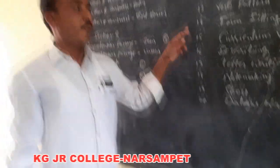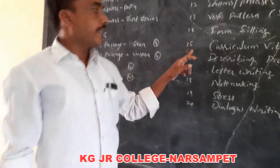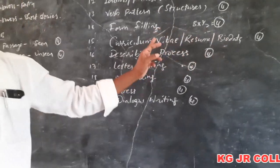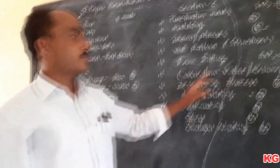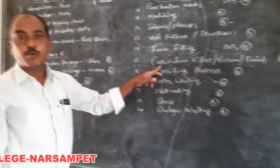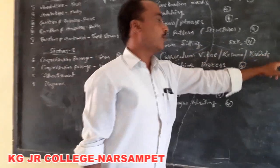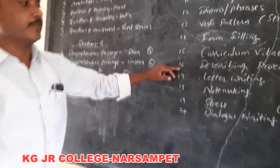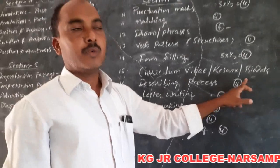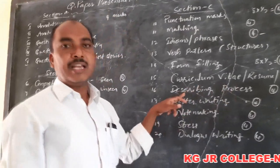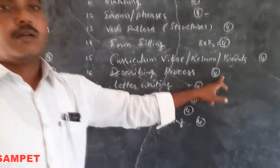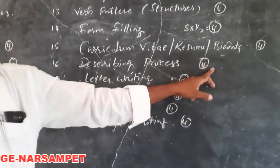The next bit is curriculum vitae, also called a resume or bio-data. These patterns are different, but if a resume is given you can also go with the curriculum vitae format — no problem. After that, the process description bit has two processes given and you have to write about any one. This should be presented in a particular box.